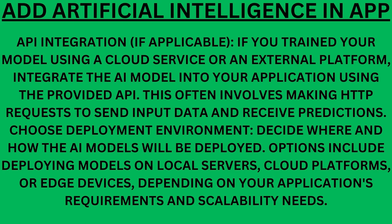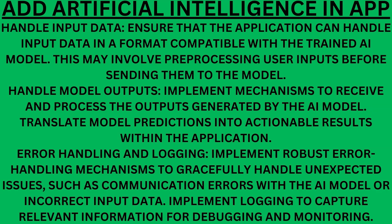Choose deployment environment. Decide where and how the AI models will be deployed — options include deploying on local servers, cloud platforms, or edge devices, depending on your application's requirements and scalability needs. Handle input data. Ensure the application can handle input data in a format compatible with the trained AI model, which may involve preprocessing user inputs before sending them to the model. Handle model outputs. Implement mechanisms to receive and process the outputs generated by the AI model and translate model predictions into actionable results. Error handling and logging. Implement robust error handling to gracefully handle unexpected issues such as communication errors with the AI model or incorrect input data.